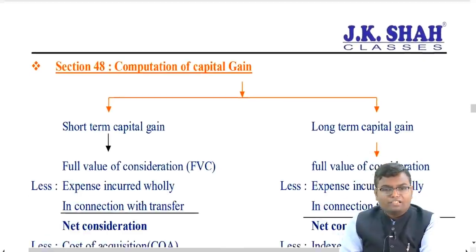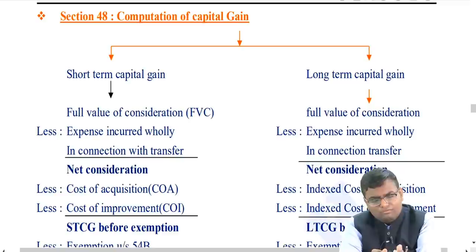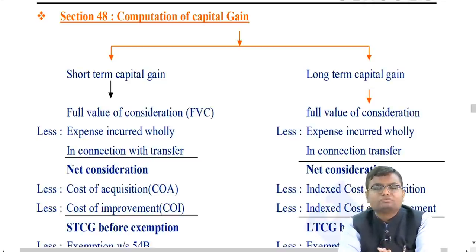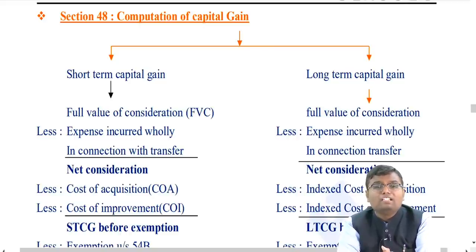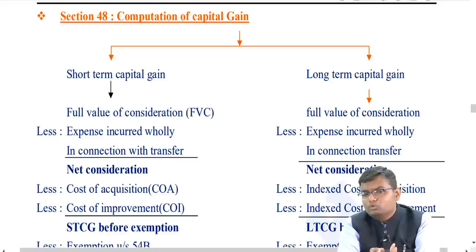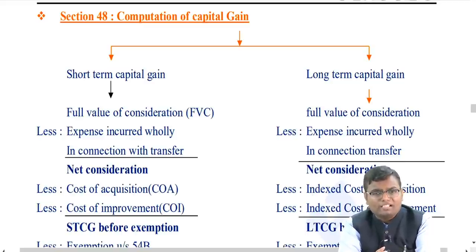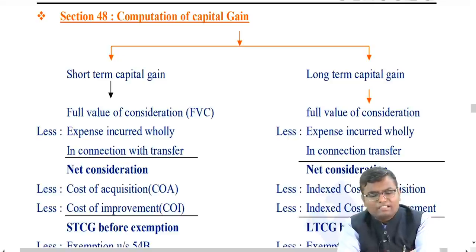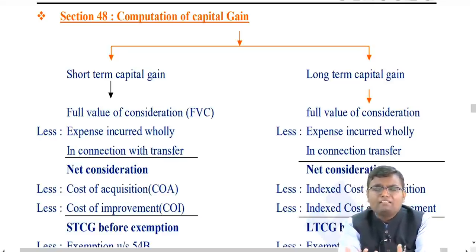To compute Short-Term Capital Gain (STCG): Start with the gross full value of consideration. Deduct expenses incurred in connection with the transfer to get net consideration. From net consideration, deduct cost of acquisition and cost of improvement. The balance is STCG.